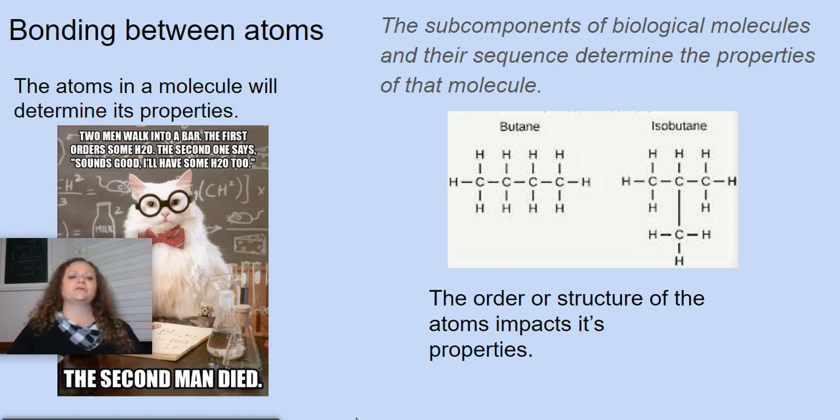So in the case of this first one, that the atoms and the molecule determine its properties, this joke is a chemistry joke: Two men walk into a bar. The first orders some H2O. The second one says, 'sounds good, I'll have H2O2.' Well, H2O2, two hydrogens bonded with two oxygens, is hydrogen peroxide, as opposed to H2O, two hydrogens bonded with an oxygen, which is water. The second man dies. It's the molecules that determine the properties.